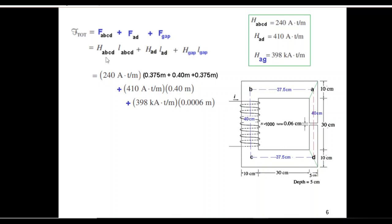So this is for this part, F_ABCD. Similarly H_AD we had calculated 410. The length is 40 centimeters from here to here: half of 10, 30, then half of 10. So multiplied by 0.4 meters. And the third part was the air gap. So the air gap was 398 kilo ampere turns. So while doing calculation you should actually multiply this by 1000. And the air gap converted into meters will be 0.0006 meters. So solving we get this answer, 678.8 ampere turns.